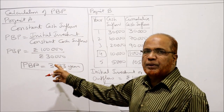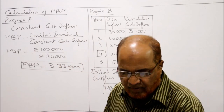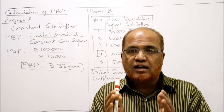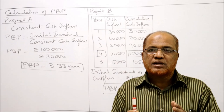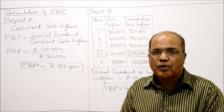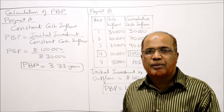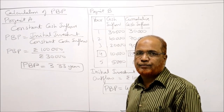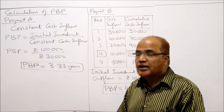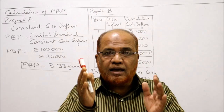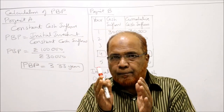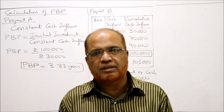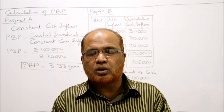We calculated the payback period by the formula method for Project A and the cumulative method for Project B. The standard payback period given by management is 5 years. Applying that standard, both projects are acceptable because the actual payback periods — 3.33 years for A and 4 years for B — are less than the standard 5 years. In the examination you must write this conclusion.